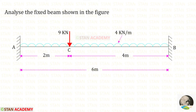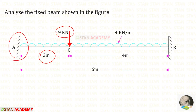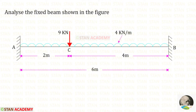Hello everyone. Today we are going to analyze this fixed beam. In this beam there are two loads: one point load of 9 kilonewton acting at a distance of 2 meters from point A, and a uniformly distributed load of 4 kilonewton per meter acting for the whole span. The length of the beam is 6 meters.